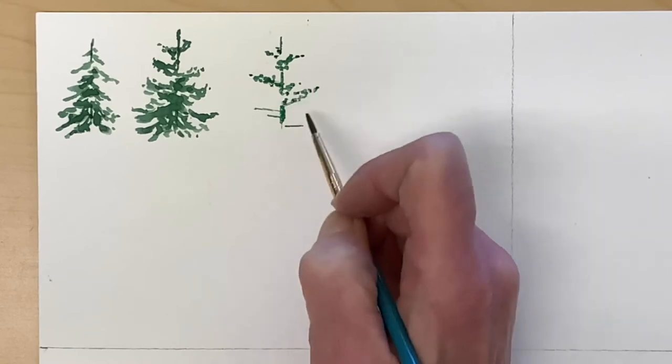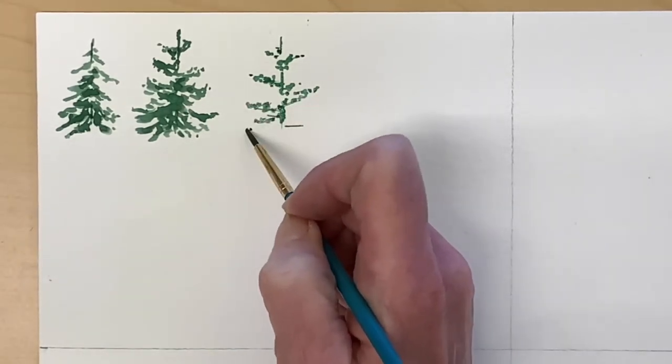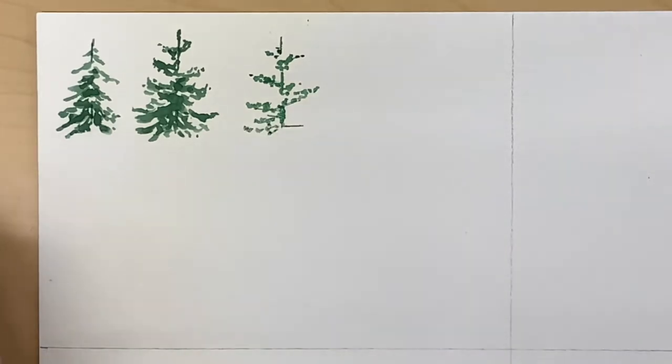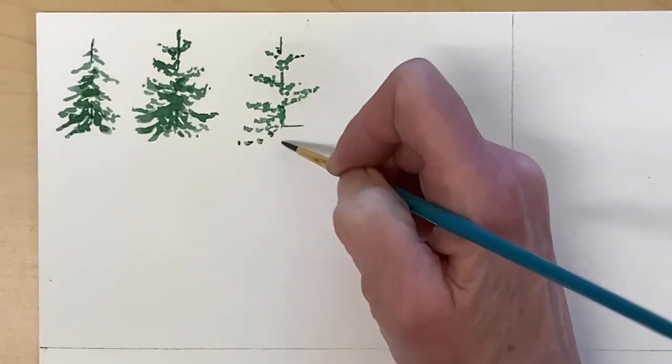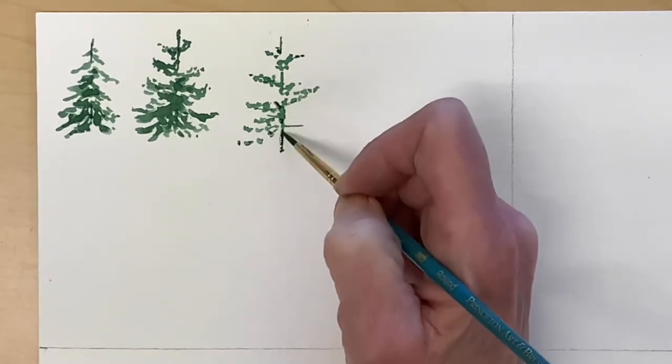In the video, it looks like I'm working really quickly, but I'm not. It's a good idea to stop occasionally, hold your paper up, see how your tree looks. And then you can adjust as you go along.